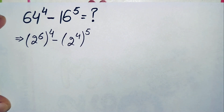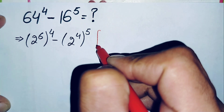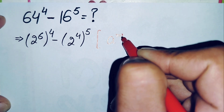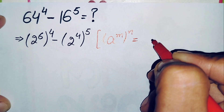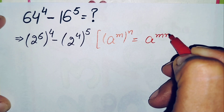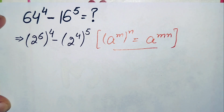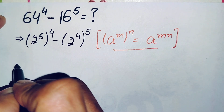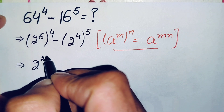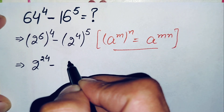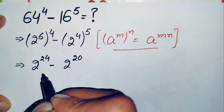Now in these two terms we will use an exponential math property and multiply the two powers with each other. The property is: a raised to power m, raised to power n, equals a raised to power m times n. Using this, we get 2 raised to power 6 times 4, which is 24, minus 2 raised to power 4 times 5, which is 20.